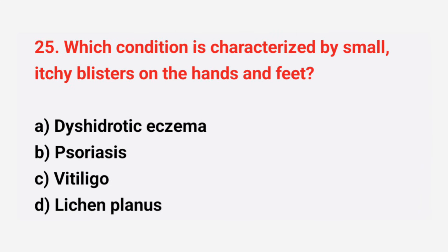Question number 25: Which condition is characterized by small blisters on the hands and feet? The right answer is option A, dyshidrotic eczema.